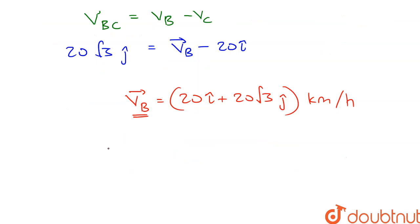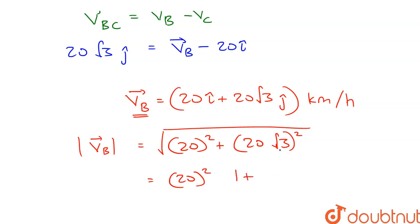Let's find the magnitude and direction as well. So magnitude of VB vector will be square root of 20 square plus 20 into root 3 square. This is equal to square root of 20 square taken common into 1 plus 3.